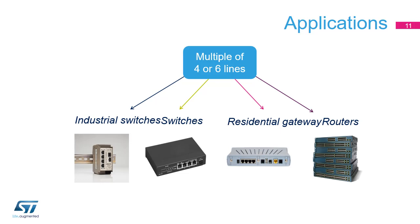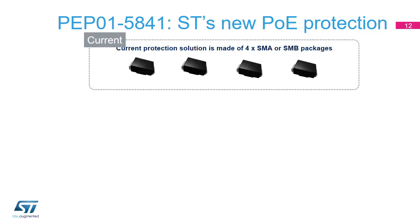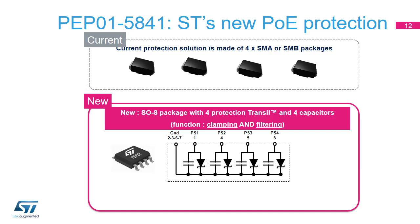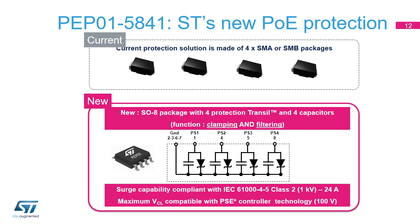Many applications embed several Ethernet ports, and quite often the number of ports is a multiple of 4. All equipment embeds one SMA or SMB device per connector. Since the number of connectors is a multiple of 4, STMicroelectronics has implemented 4 protection devices and 4 capacitances in an SO8 package. ST's PEP-01-5841, or PEP-01, has been designed and specified to meet IEC 61000-4-5 with 1 kV, 24 amps, and a maximum clamping voltage (VCL) equal to 100 volts.